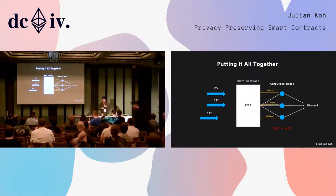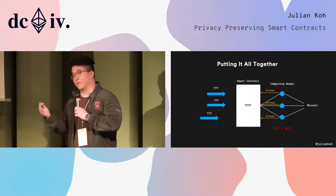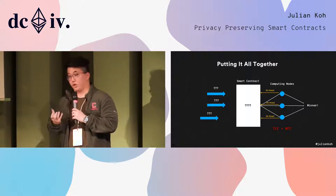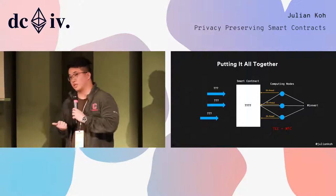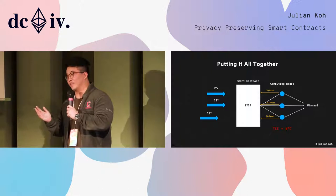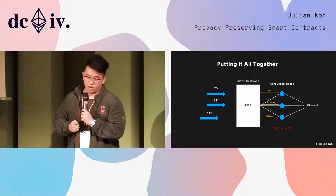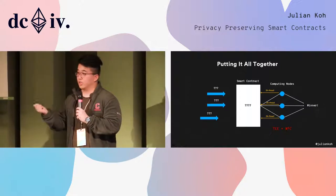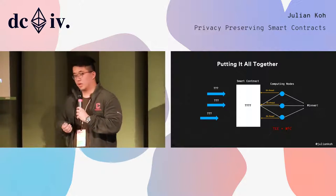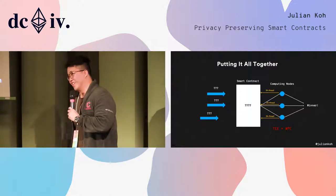To put it all together: we can address the original problem of hiding inputs and smart contract state while producing an output by combining all three methods. The computing nodes must run trusted execution environments, and if that is compromised, they also run an MPC protocol — so even if someone fakes an enclave, they still only have a piece of the data, giving really strong adversarial guarantees. Lastly, zero-knowledge proofs let these nodes show the whole world they ran their computation correctly, and the smart contract economically incentivizes the whole process — enabling private voting and many other applications. Thank you.